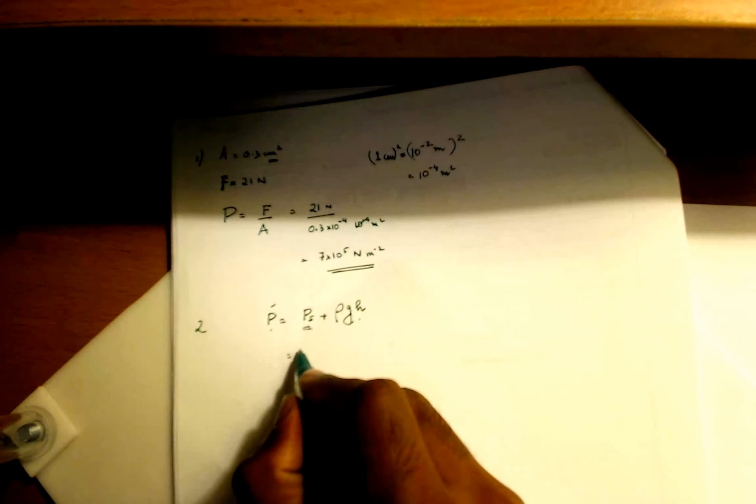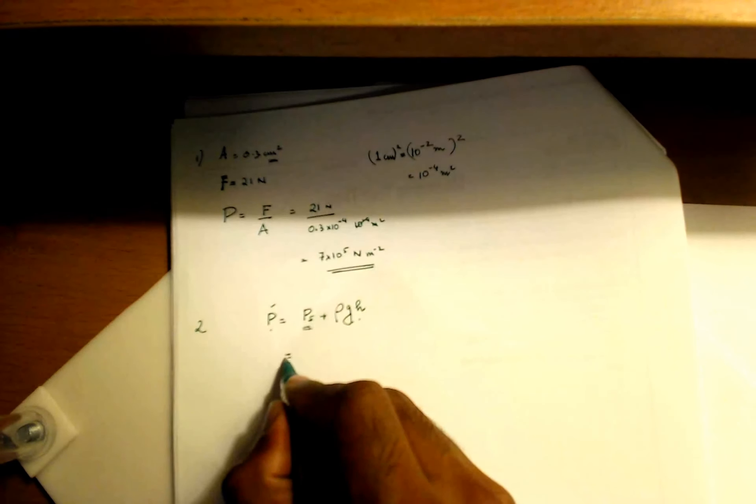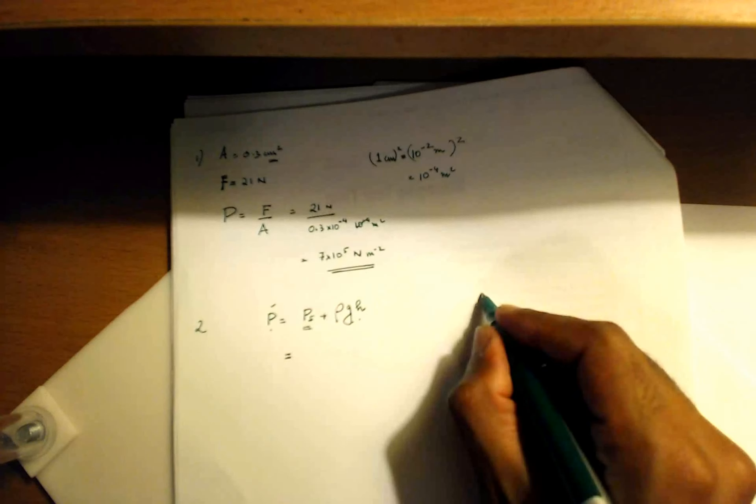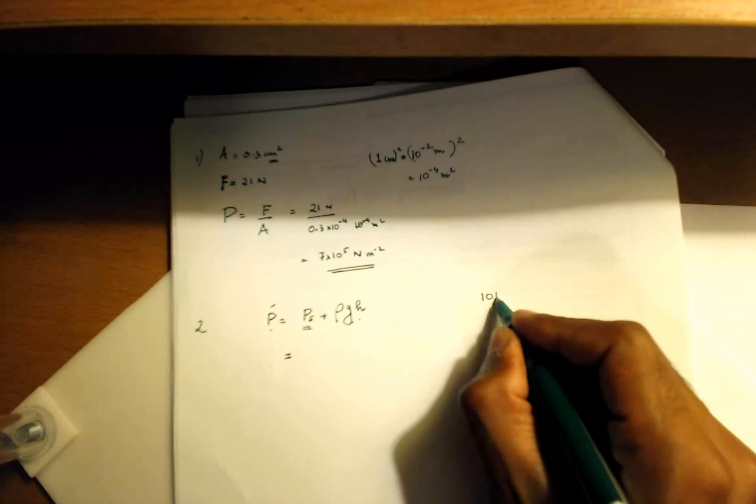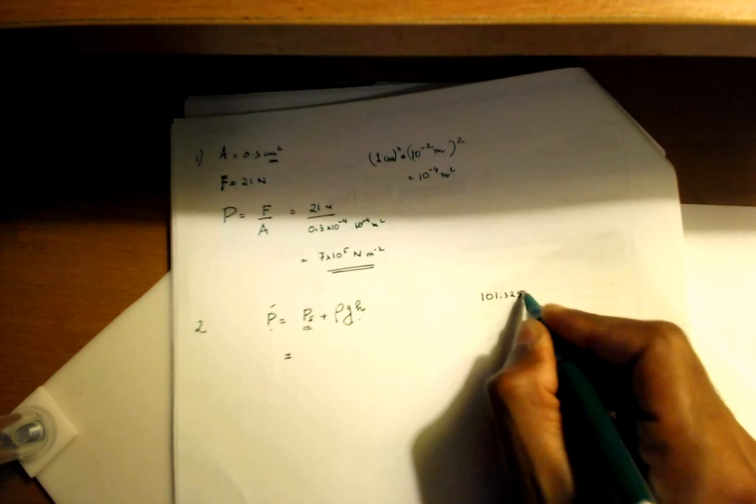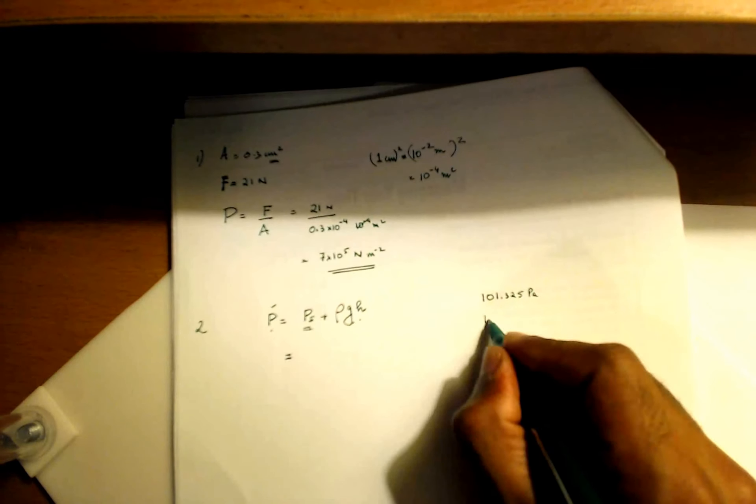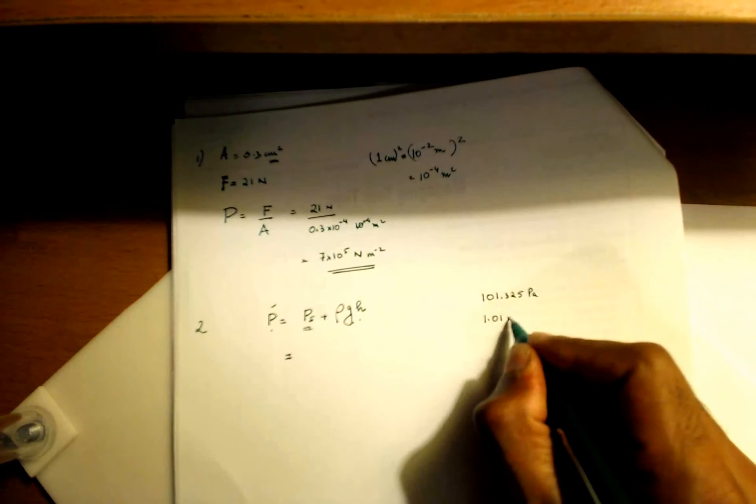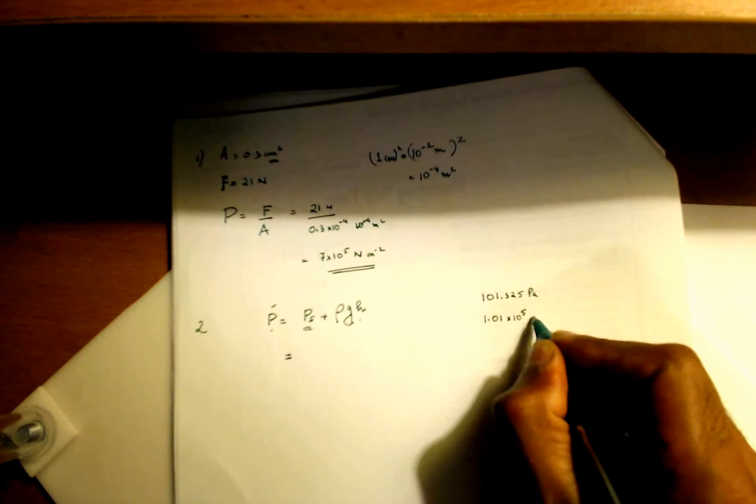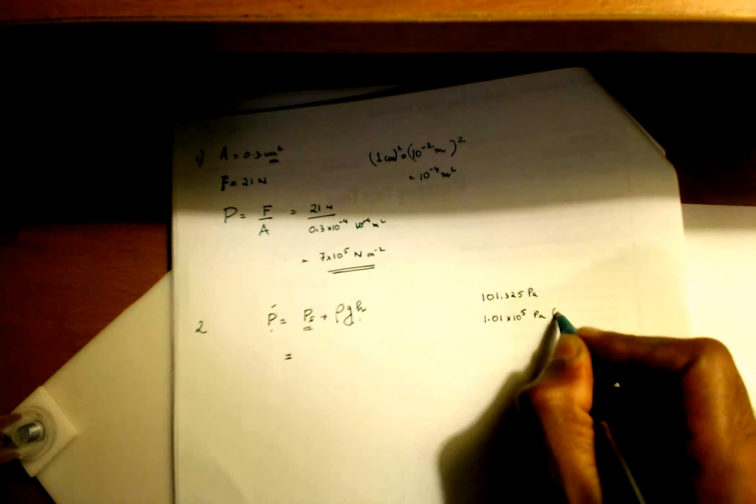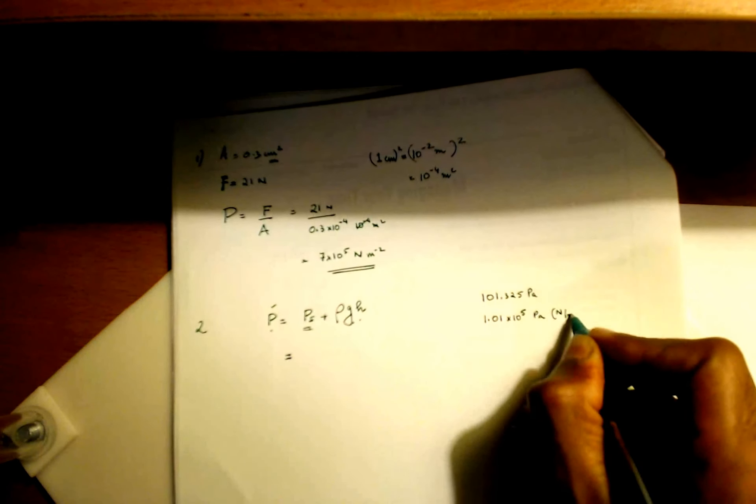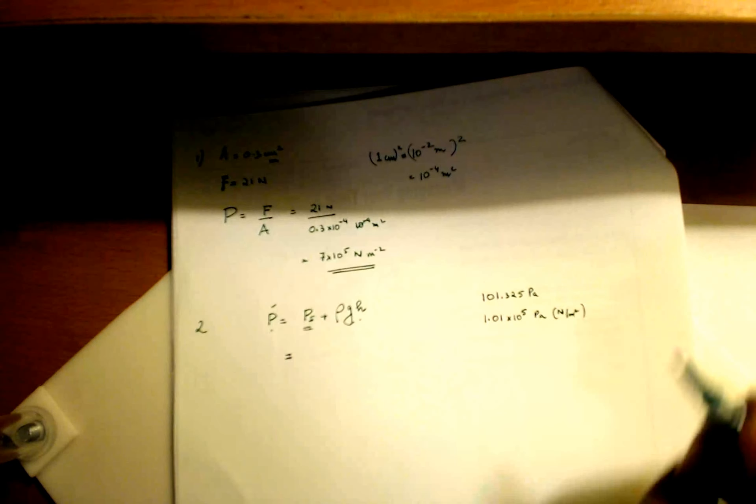Now the surface pressure depends on how your professors want to approximate this value. Some people like to have it written out as 101,325 pascals. Some people just like to write it as 1.01 times 10 raised to 5 pascals.